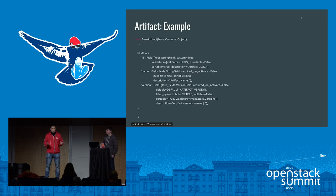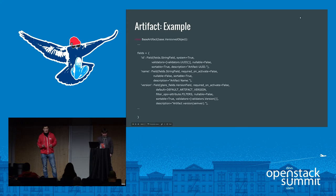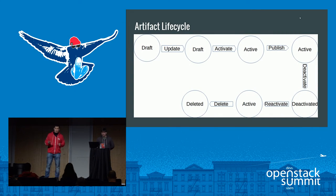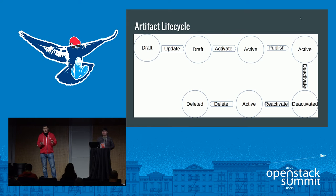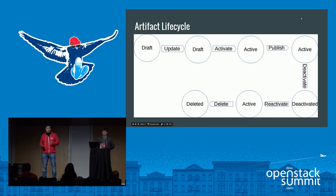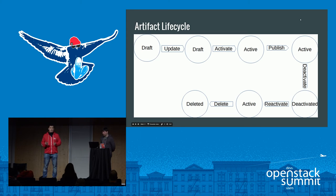Now we have some notion of artifact definition. What can we do with an artifact in Glare? The typical workflow is: first, we start with an artifact draft — just some draft version, for example of a Heat template. After that, you can update properties required for this artifact; for example, for a Heat template you must specify the template file. After defining all required properties and blob values, the artifact is ready for activation. Once activated, you can share the artifact with other users, making it public. We also support additional actions like delete, reactivate, and so on — mostly based on the Glance workflow for images.